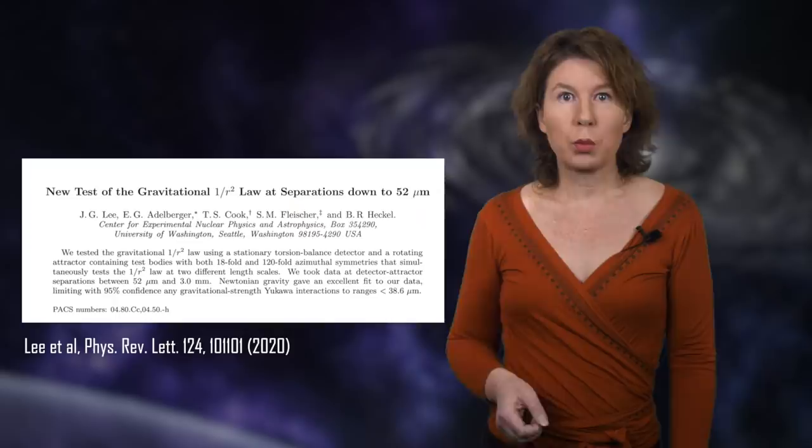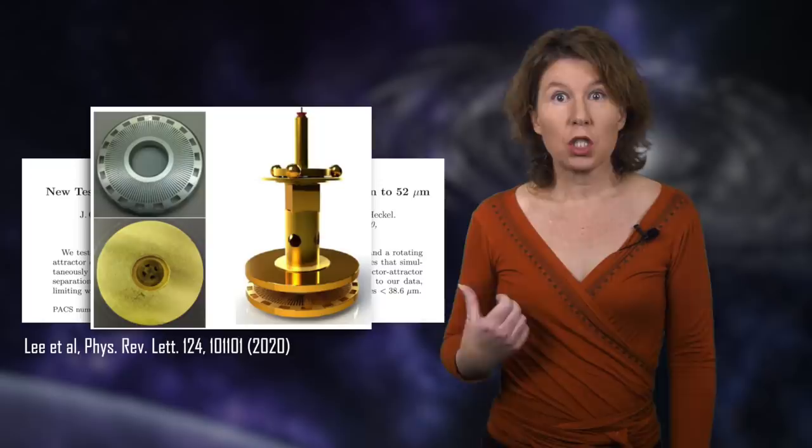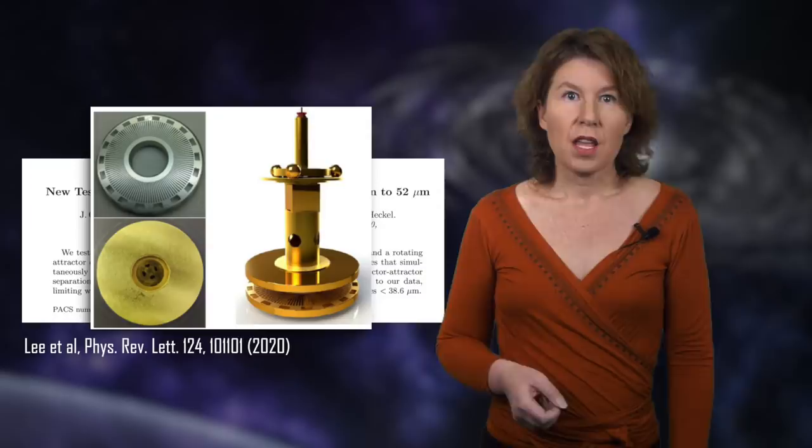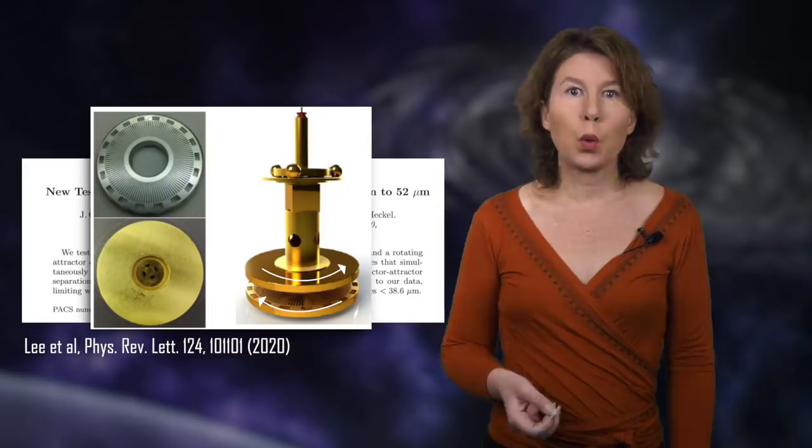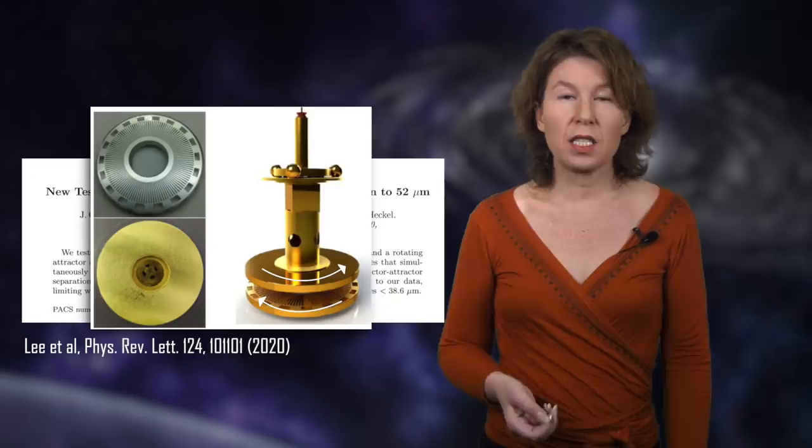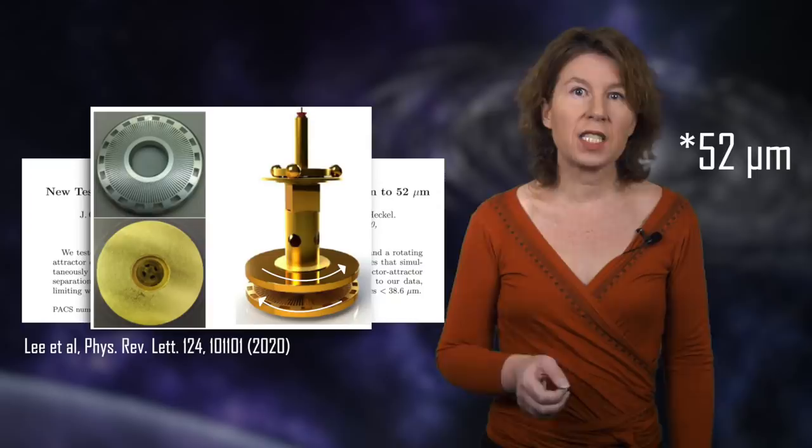These are done for example by the group of Eric Adelberger in Washington DC. This image shows the key component of their measuring device. These two parts are rotated against each other while the gravitational attraction between them is being measured. This creates a periodically changing force, which is a really clever way to filter out noise. Their most precise measurement yet was published in 2020 and confirms that the one-over-r-squared law is correct all the way down to 57 micrometers.